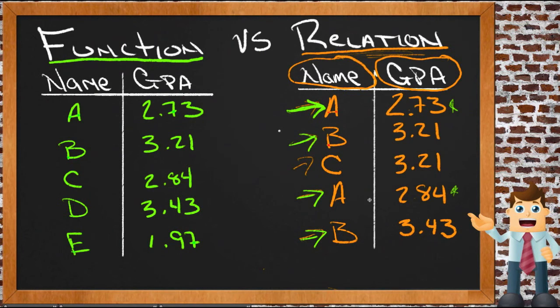Now a function has a single input A and a single output. There aren't any other A's. If I ask you what's the GPA for student whose last name starts with A, you tell me 2.73 every time. I can trust that if I say what's the GPA for the student whose last name starts with A, it will always be 2.73.